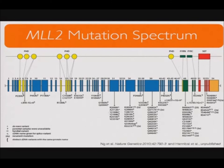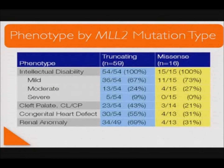In exon 39, several polyglutamine tracks are encoded, and we find multiple glutamine codons mutated to nonsense codons. If we try to group probands by mutation type — either truncating nonsense or frameshift versus those with missense mutations — we find no striking differences, although larger numbers are needed to determine if a significant trend exists in those with cleft palate, congenital heart defect, or renal anomaly.